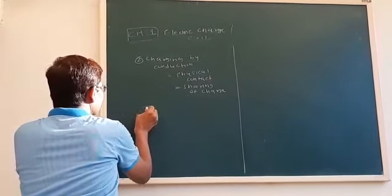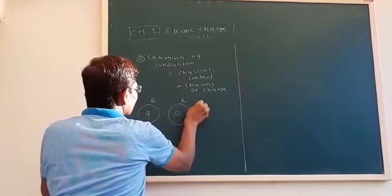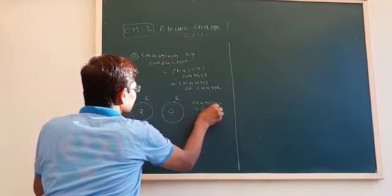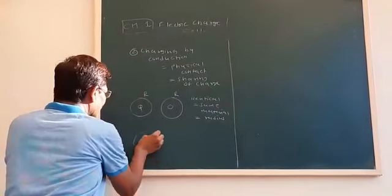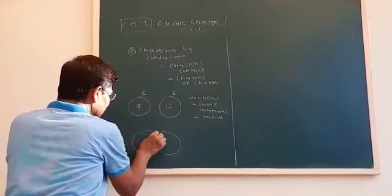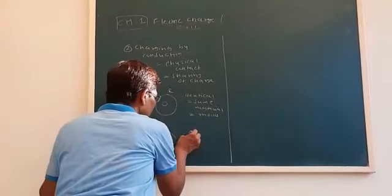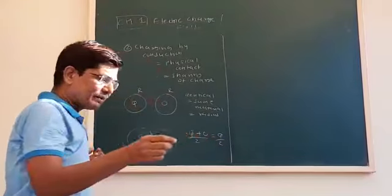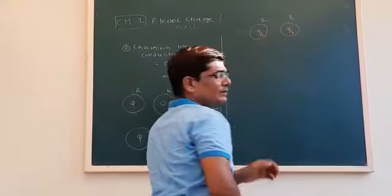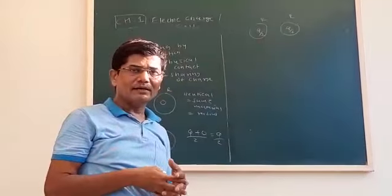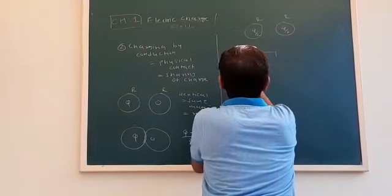For example, we have an isolated sphere of radius R with charge Q, and another identical sphere of the same material and same radius. When we bring them in contact, there will be sharing of charge. Since the radius of both spheres is the same, once we separate them, both will have Q/2 charge each.